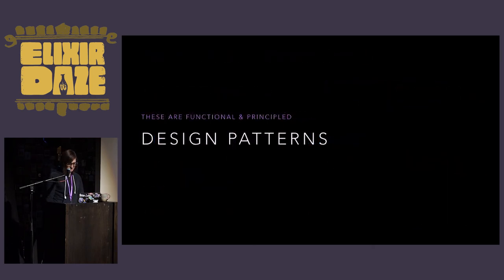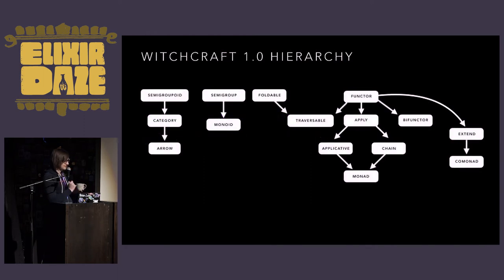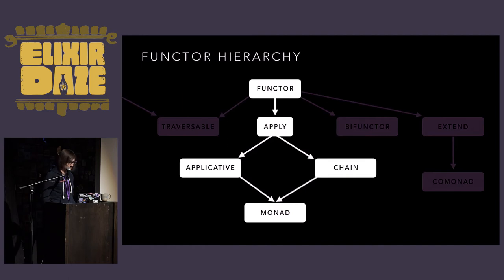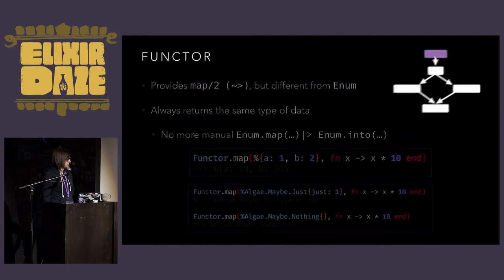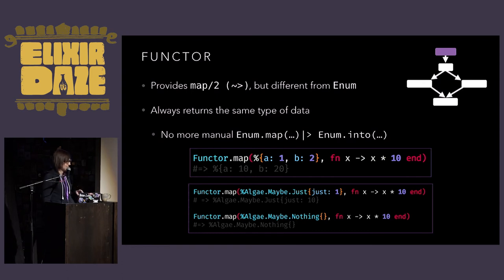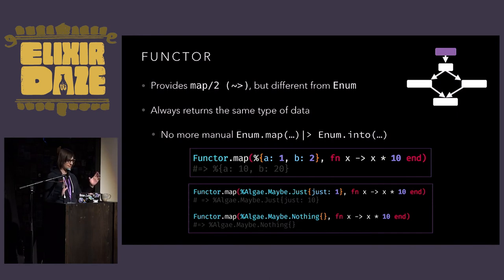So, I said we have a couple of design patterns in Witchcraft. Here are all the ones presently in there, and we're going to be looking specifically at the functor hierarchy. Functor, the first one: you provide an implementation of map, and you get back a whole bunch of functions. This is the closest one to Enum — though Enum kind of mixes a few of these. You get the tilde angle bracket pipe operator. You always get back the same type of data as you put in, unlike in Enum. In enum.map, if you feed it a map data structure, you'll get back a list. Here, we automatically stick it back into the map for you so it's always consistent — inputs and outputs are always the same kind.